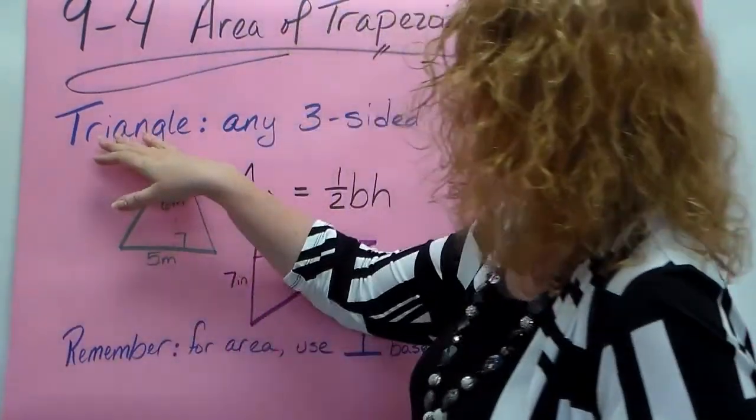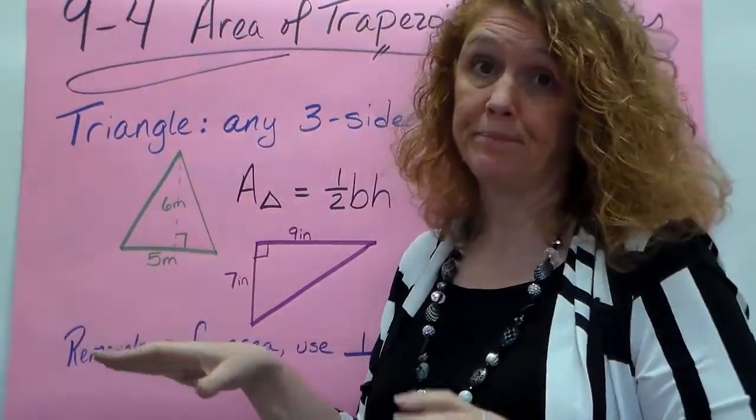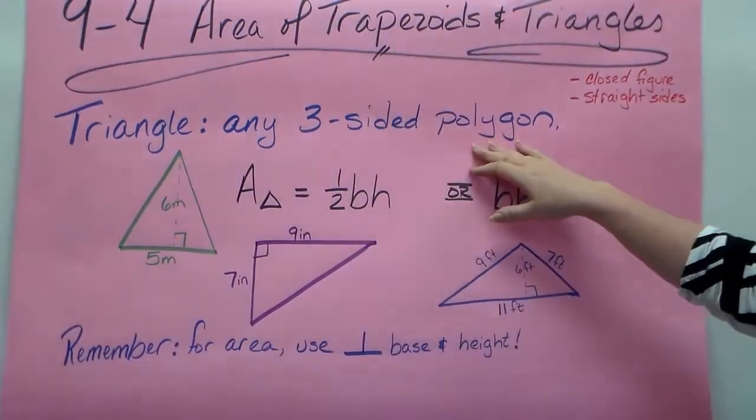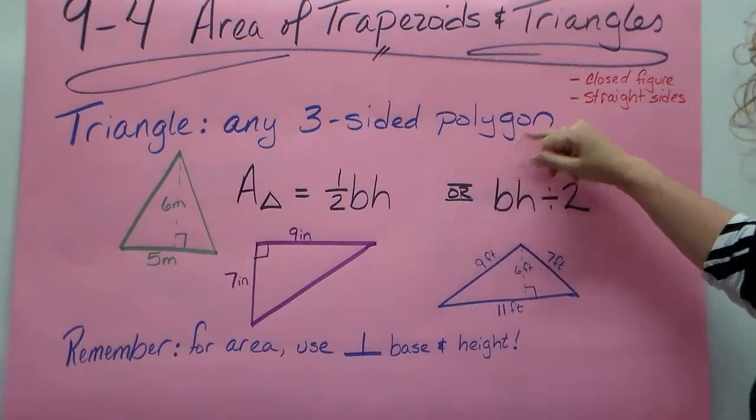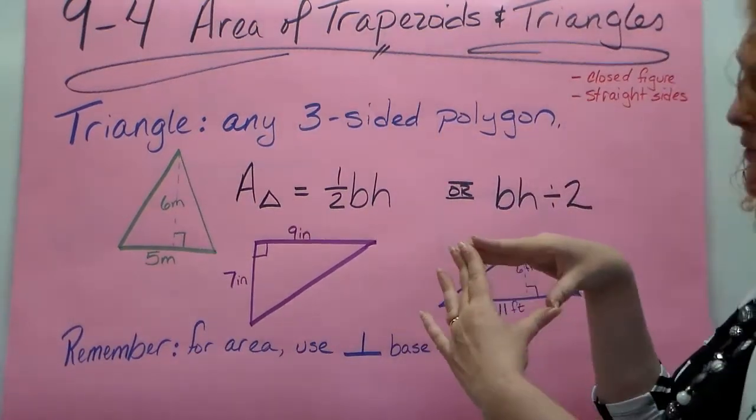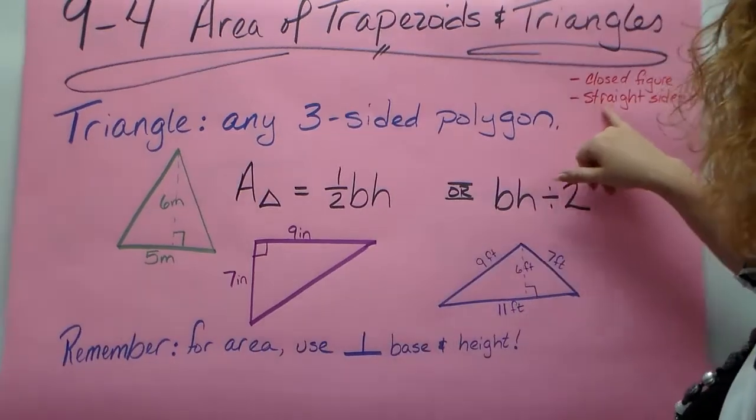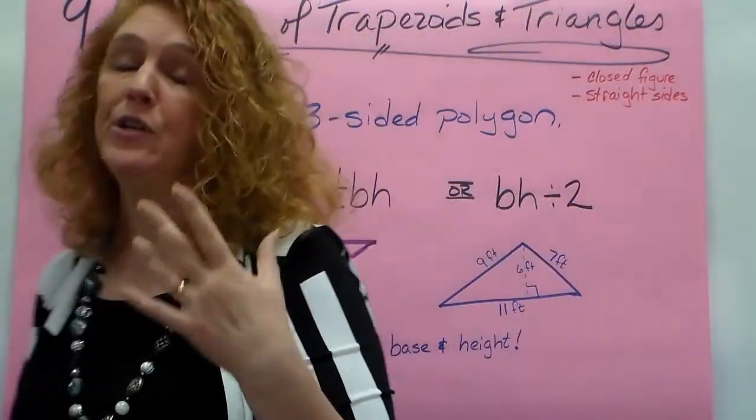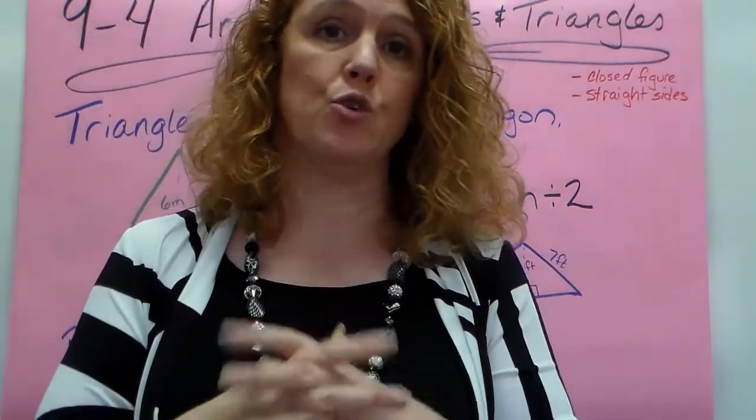Now we're going to start with triangles and we're looking for the area. Remember, a triangle is any three-sided polygon. The definition of a polygon means it's a closed figure, it doesn't have open sides, all three of the sides touch and the sides are straight, there's no curves to them.